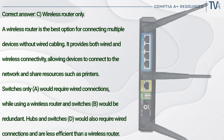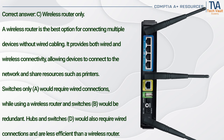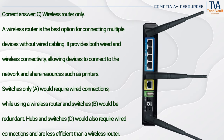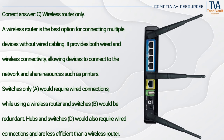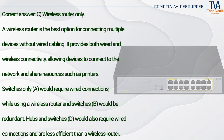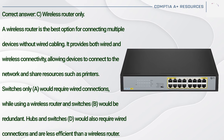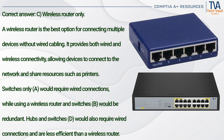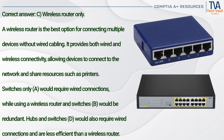Correct answer: C. Wireless router only. A wireless router is the best option for connecting multiple devices without wired cabling. It provides both wired and wireless connectivity, allowing devices to connect to the network and share resources such as printers. Switches only (A) would require wired connections. A wireless router and switches (B) would be redundant. Hubs and switches (D) would also require wired connections and are less efficient.